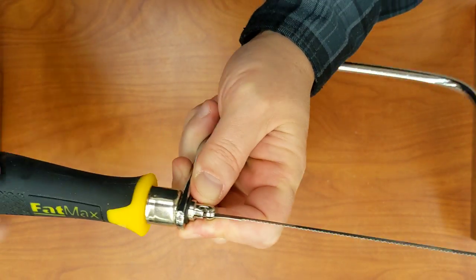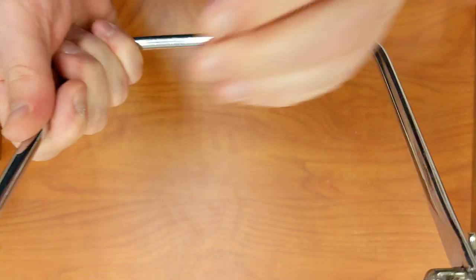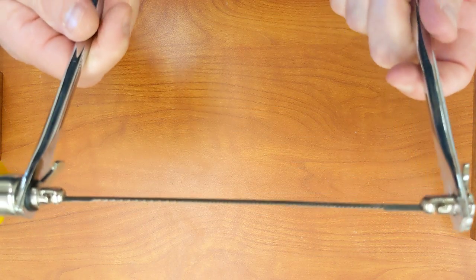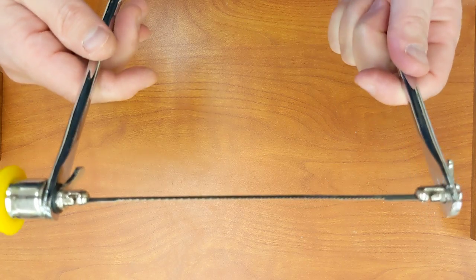Once it's secure all the way, double check that the teeth are pointing toward the handle and you're done. You've just reassembled your coping saw.